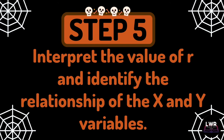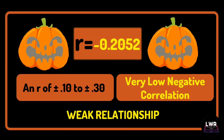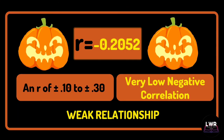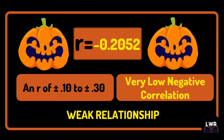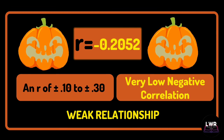The last step, step number 5, is to interpret the value of r and identify the relationship of the x and y variables. The answer to question number 2 is a very low negative correlation, which means that it has a weak relationship.